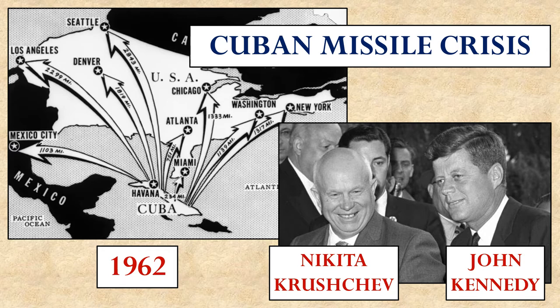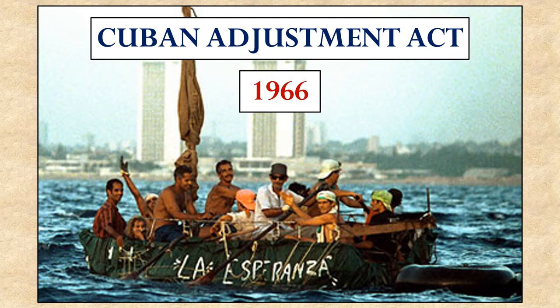In exchange, the United States removed some missiles that had been stationed in Turkey, relatively close to the Soviet Union. In the aftermath of the Cuban Missile Crisis, even more Cubans continued to flee to the United States. This led to a law called the Cuban Adjustment Act, under which refugees from Cuba could become permanent residents of the United States and eventually work their way toward citizenship — putting them at the head of the line of other immigrants. This was a product of the Cold War and our desire to undermine the communist regime in Cuba.